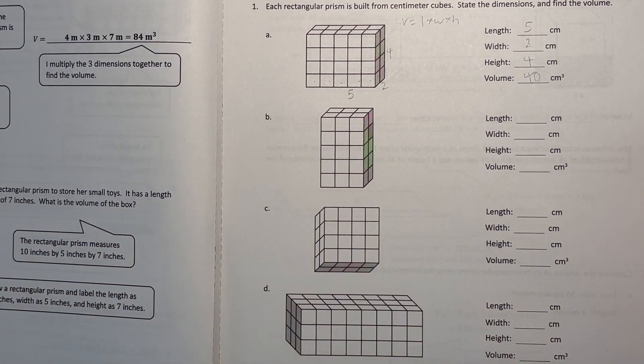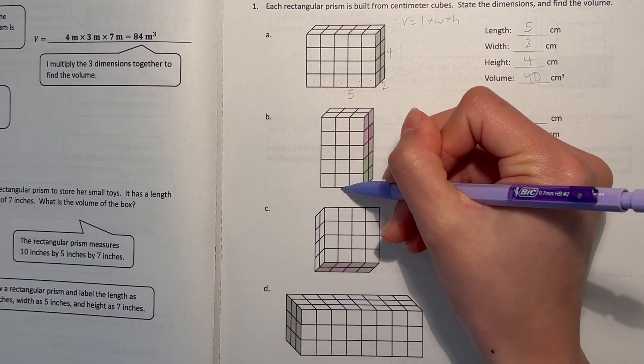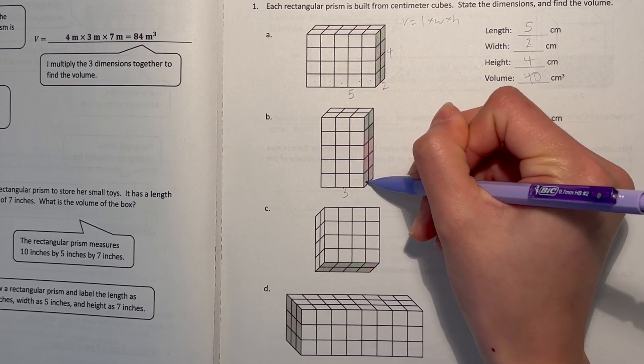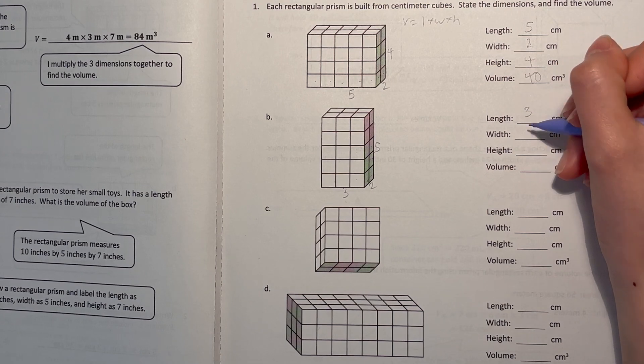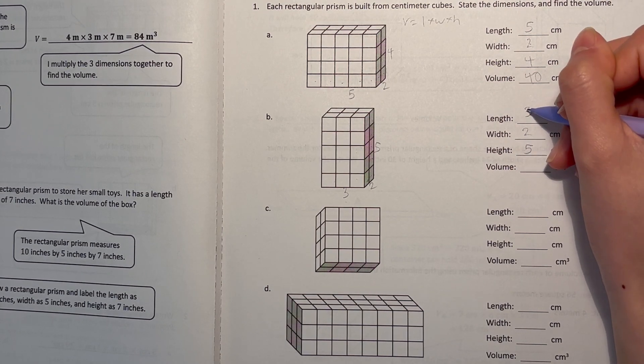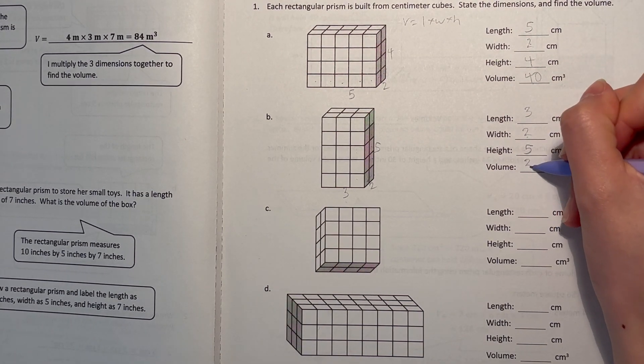Next, I'm going to label everything. Length is three, width is two, and height is five. Three times two times five is three times ten which is 30.